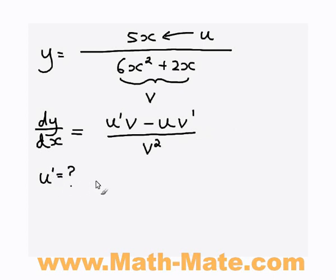So first off, let's find out what u' equals. Well we know that u equals 5x. So the derivative of this with respect to x is just going to equal 5. So that's u dash.